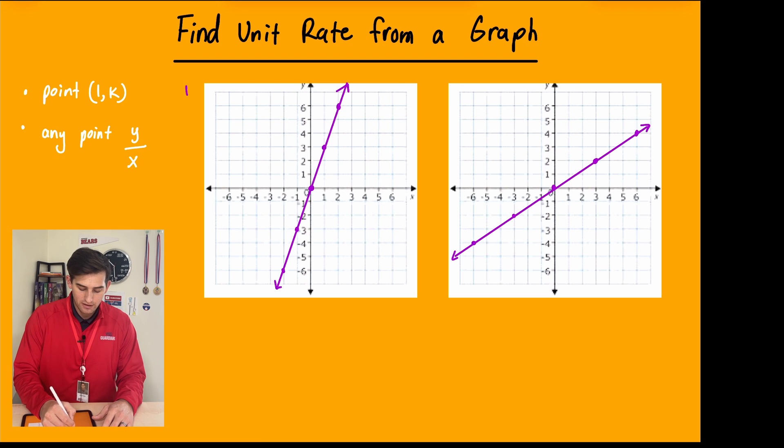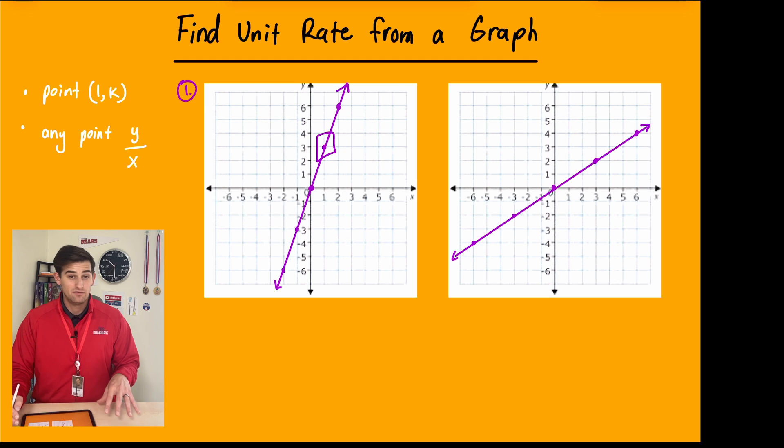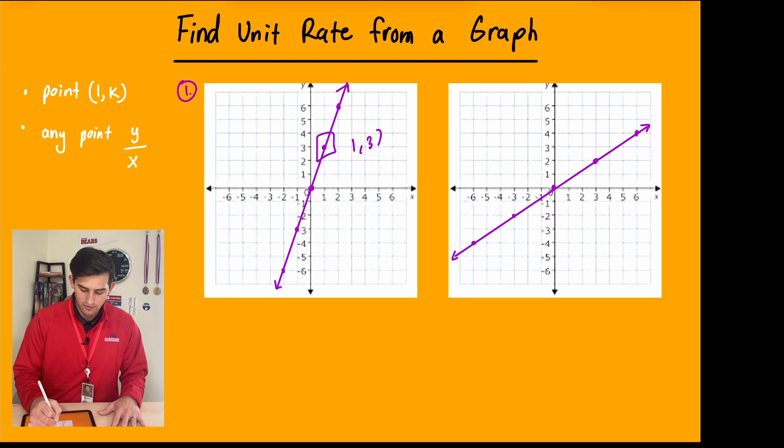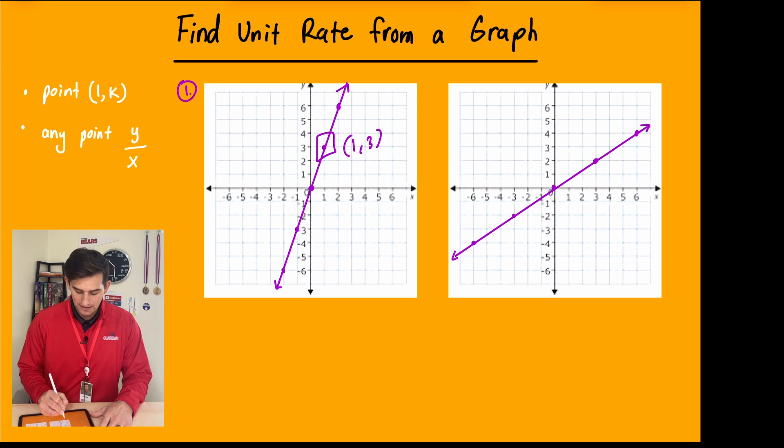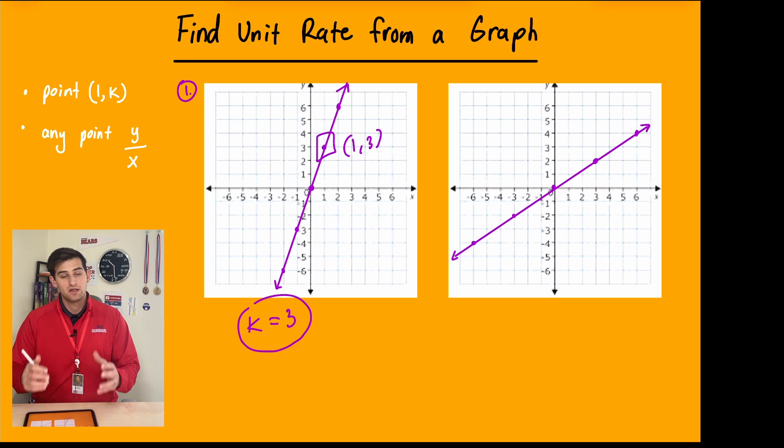So if we look at example number one here, we notice that we have this point right here that is actually very easy to tell that is the coordinate 1, 3. So we can actually use this first bullet point here to figure out that k is equal to 3. And that would be our unit rate for number one, because that is the y value that is associated or corresponding with the x value of 1. So that would be our unit rate 3.